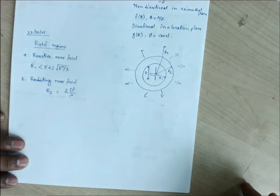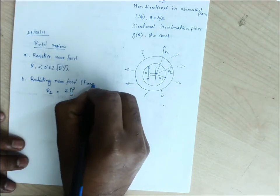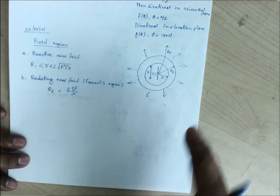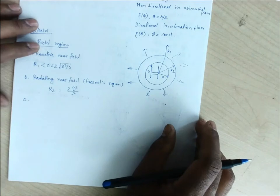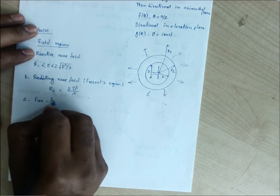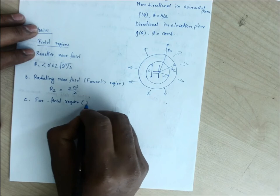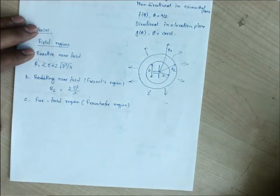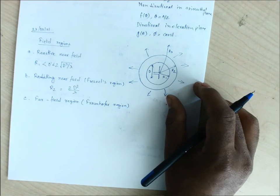The radiating near field is also known as the Fresnel region. Outside of r2, when the distance is greater than r2, we have the far field region, which is also known as the Fraunhofer region. This far field is the main radiating field considered for any antenna, because our intention is to have the signal received at a far distance. Our main consideration will be with respect to this Fraunhofer region.